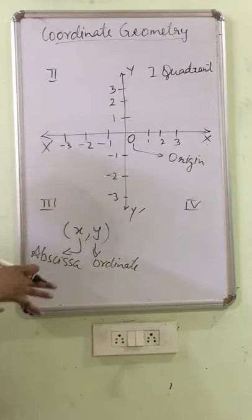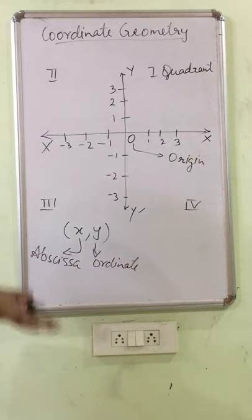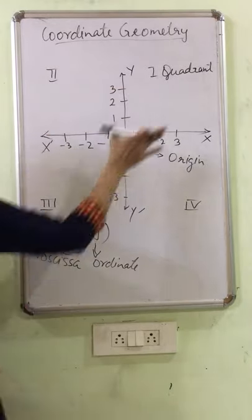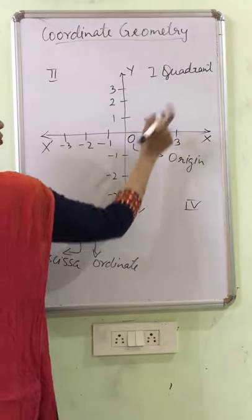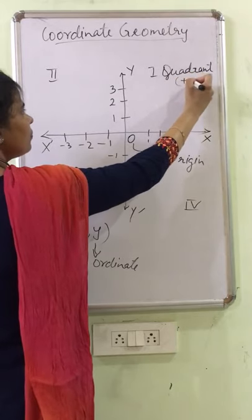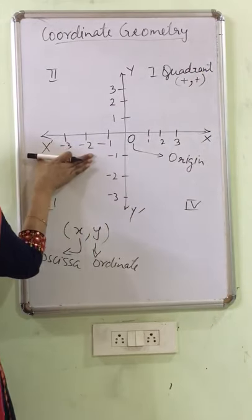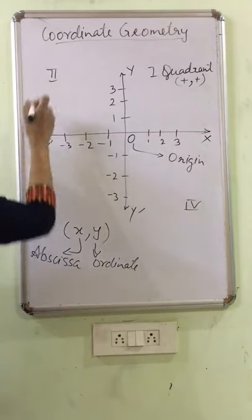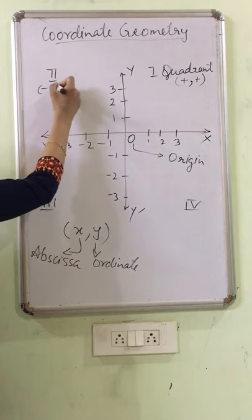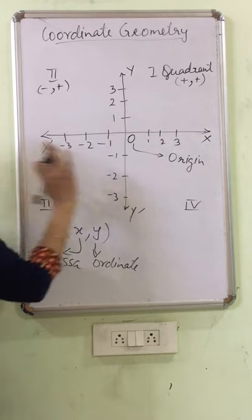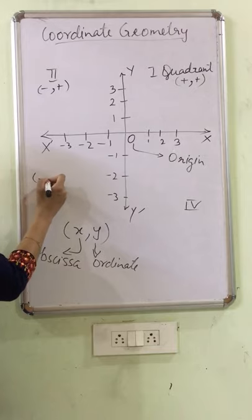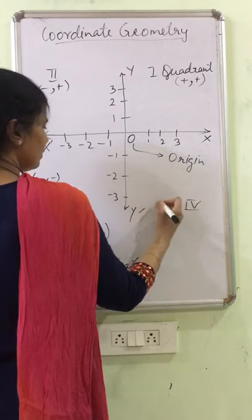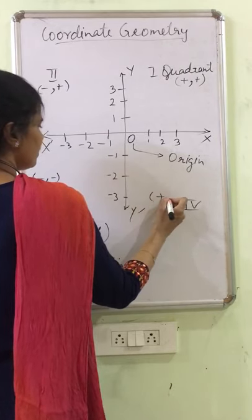So first coordinate, you have to remember this - that first coordinate is always x-coordinate and then y-coordinate. And here, first quadrant, you can see both x and y are positive, so plus plus. Here, x is negative and y is positive, so the sign of the second quadrant would be always minus plus. X and y both are negative, so here it would be minus minus. If x is positive and y is negative, then it is plus minus. So just by looking at the sign of the digits, you can easily tell in which quadrant it is going to lie.